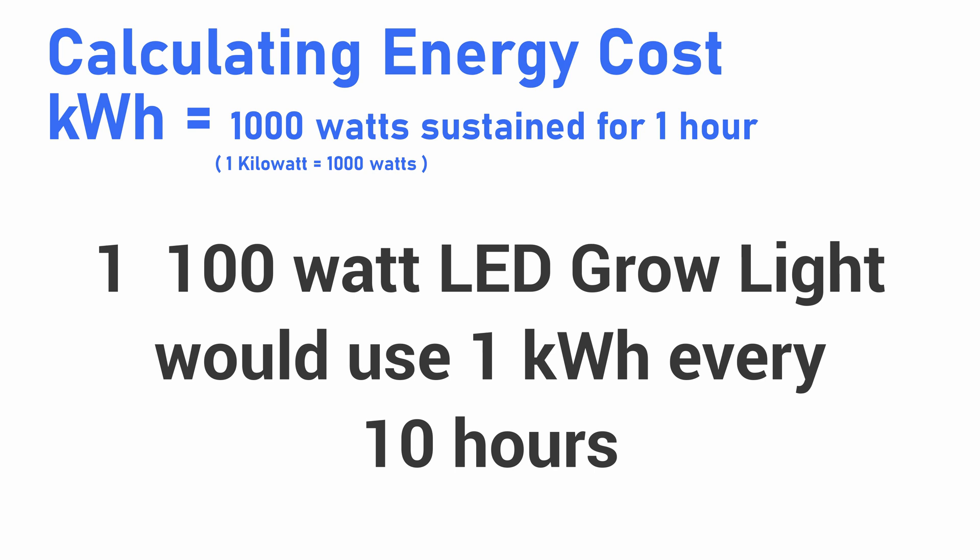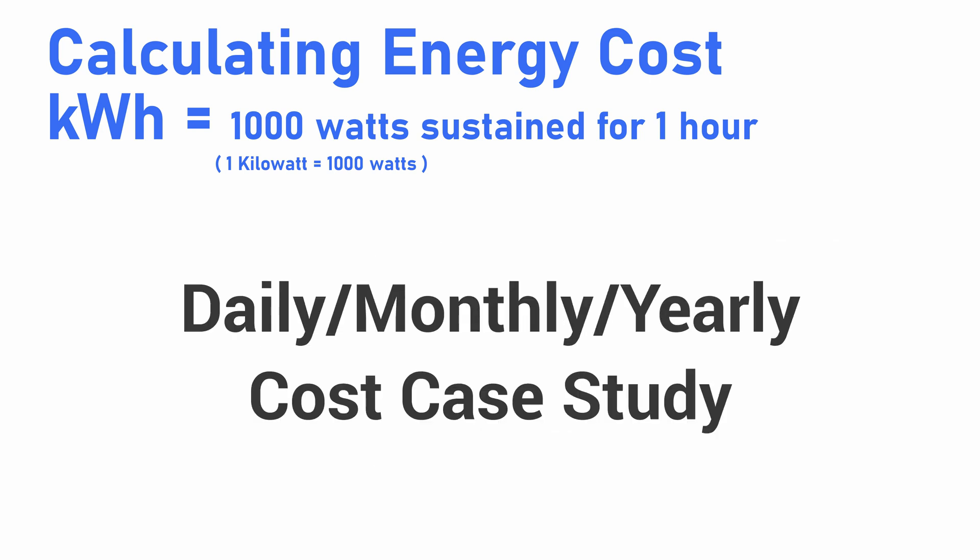One more example to further illustrate this: a 100 watt light running for 10 hours will hit your one kilowatt hour, so it would only be 13 cents. You could run this light for 10 hours a day and it would be charged 13 cents a day. Now let's do a little study to see how much electricity we'd be using and paying for daily, monthly, and yearly.